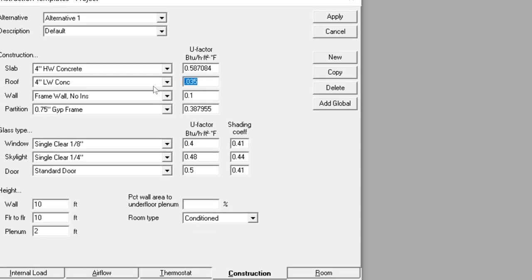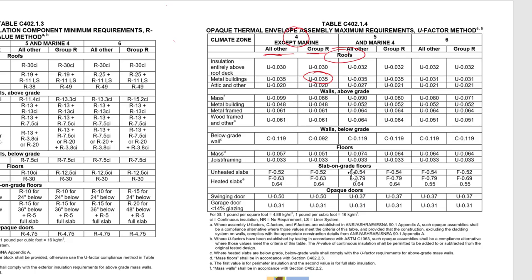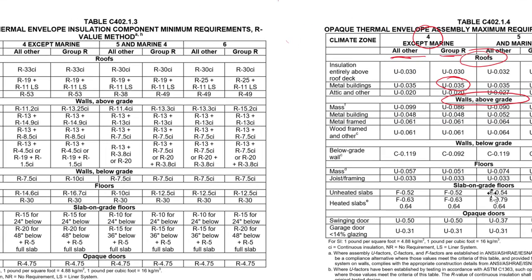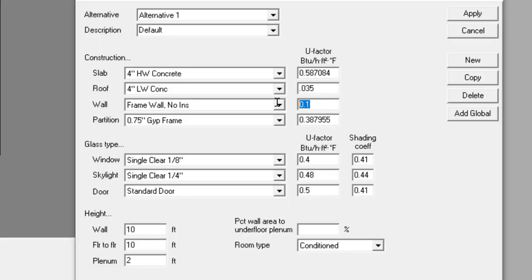So we'll set the roof at U = 0.035. For the wall above grade, we go back and look for the highest U-value across the two columns. The highest value is 0.099, and we're going to round that up to 0.1, so we'll put in 0.1 for the wall.